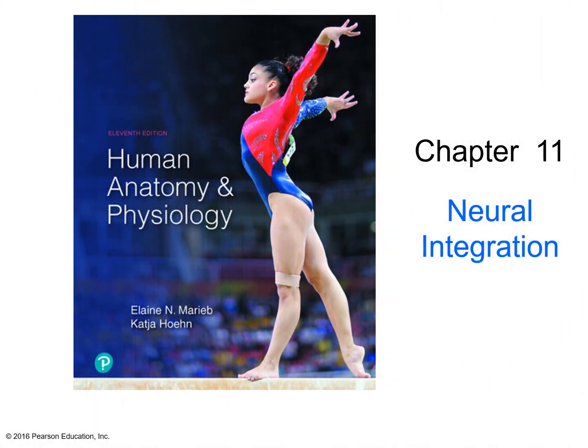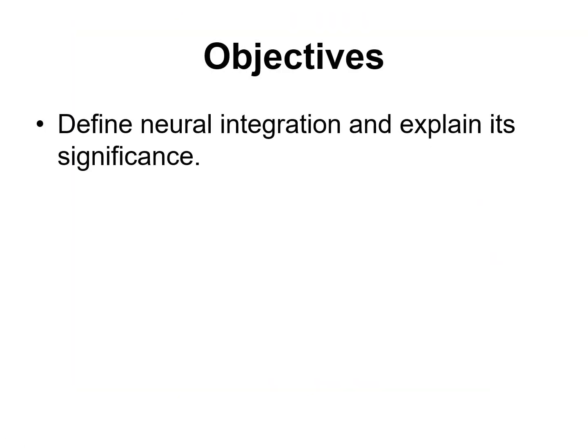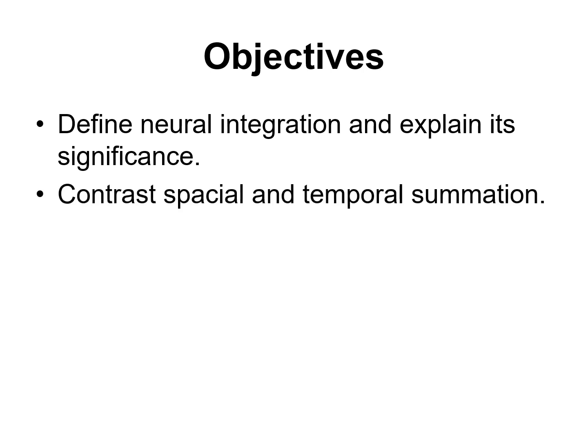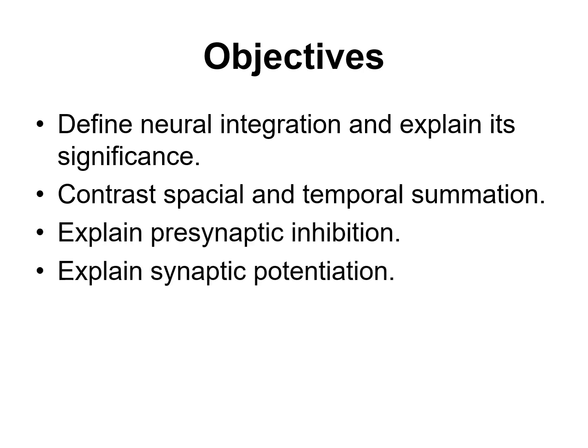In this screencast, we will cover the topic of neural integration. This topic may be found in Chapter 11 of your textbook. Here are our learning objectives: define neural integration and explain its significance, contrast spatial and temporal summation, explain presynaptic inhibition, and explain synaptic potentiation.